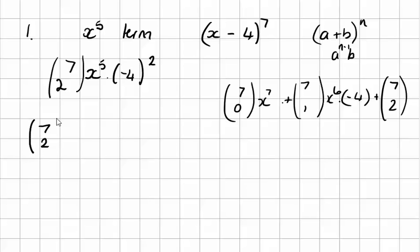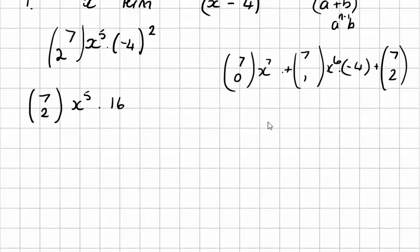So, first of all, we'll do 7, 2, x to the power of 5, times minus 4 times 16. So, we've got that at the moment. So, minus 4 to the power of 2 is 16. Who remembers how I'm going to work out 7, choose 2, it's called in my video. So, the formula. 7 factorial over 2 factorial times 7 minus 2 factorial. So, that is 7 factorial over 2 factorial times 5 factorial.